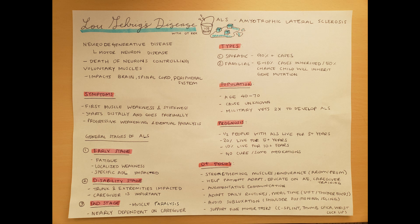The population that ALS impacts is the age group between 40 to 70. The cause is unknown. There is some interesting research about military veterans having two times the chance to develop ALS. The prognosis for ALS is really hard — half the people with ALS will live for about three years, 20% live for about five years, and 10% live for about ten years. Because there's no cure, it's really challenging and a lot of it is about adapting to the circumstances. There are some medications that may help, but only about four exist for ALS at this time.